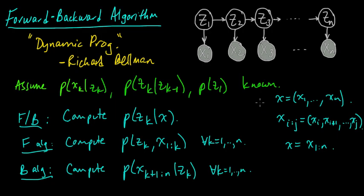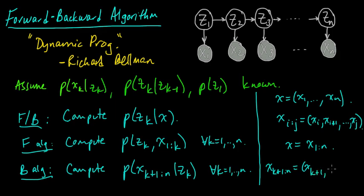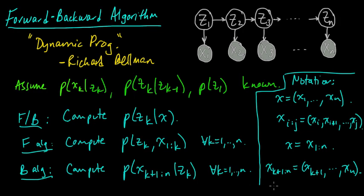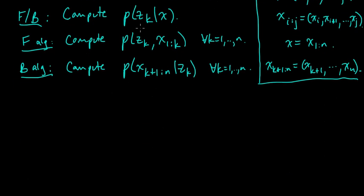To be clear, when I write XK+1:N, using our convention, it means XK+1, XK+2, XK+3, up to XN. So in the forward-backward algorithm we are doing these two steps — the forward part and the backward part. And the question is: if we can compute these, how do they give us the desired result?